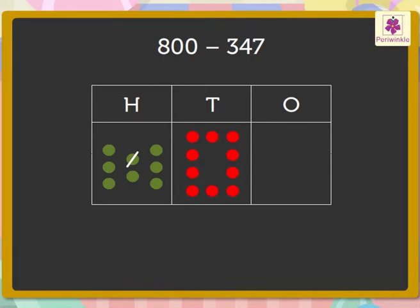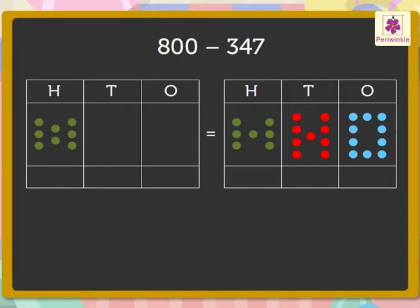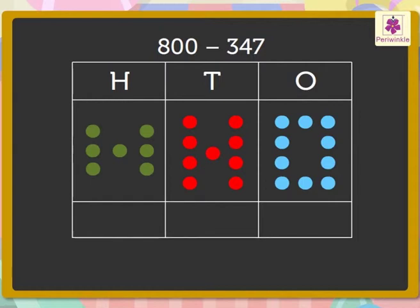So we regroup one green dot to ten red dots, as we know that one green dot is equal to ten red dots. Now we have ten red dots, so now we can regroup one red dot to ten blue dots also. So now we have ten blue dots, nine red dots, and seven green dots after all the regrouping.